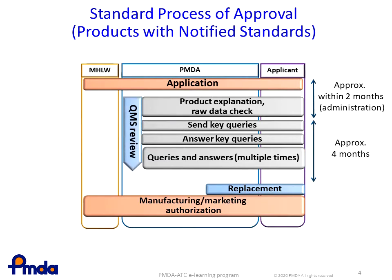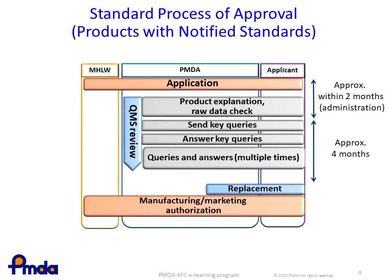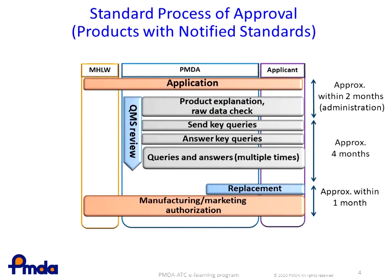A QMS review is conducted concurrently with document review and Q&A exchange. After discussions with PMDA, the applicant then resubmits some of the documents for review, and if they are acceptable, an authorization of manufacturing and marketing will be given within one month. Therefore, the total time from application to approval is seven months for ordinary products.